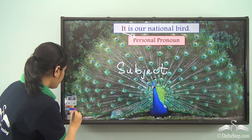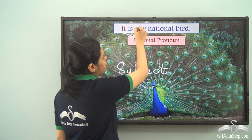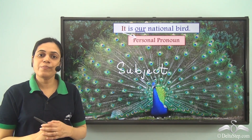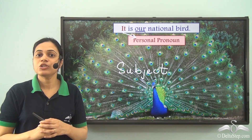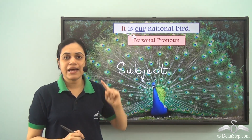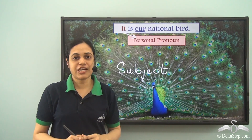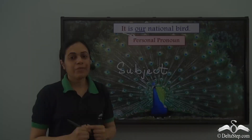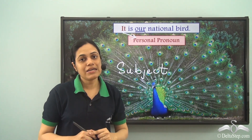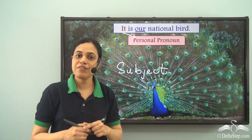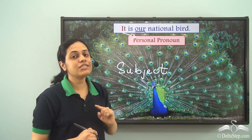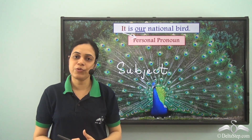You might think that the word 'our' is also a pronoun here. But 'our' is actually acting like a possessive adjective, because it refers to the bird. So 'our' is a possessive adjective and not a possessive pronoun — it is not a pronoun here.